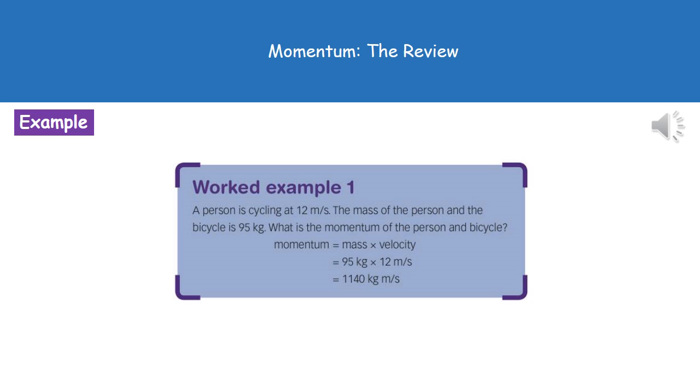So first thing we do is turn back to page 2 in our exam booklet and look up our momentum formula, and write that down. So momentum is mass times velocity. Then looking through our question, we can see that the velocity is 12 meters per second and the mass is 95 kilograms. So substitute our numbers in, and we get 95 times 12, put that into your calculator, and we get our answer of 1140.